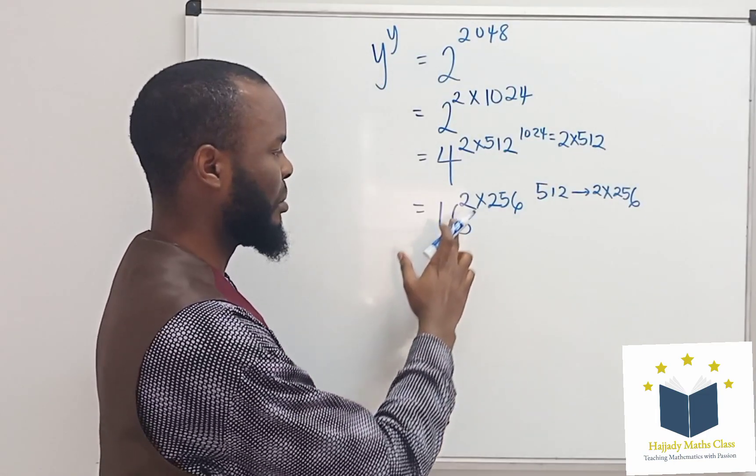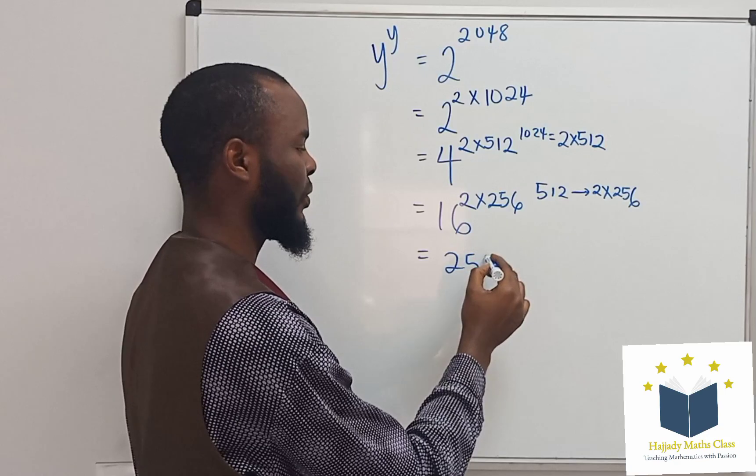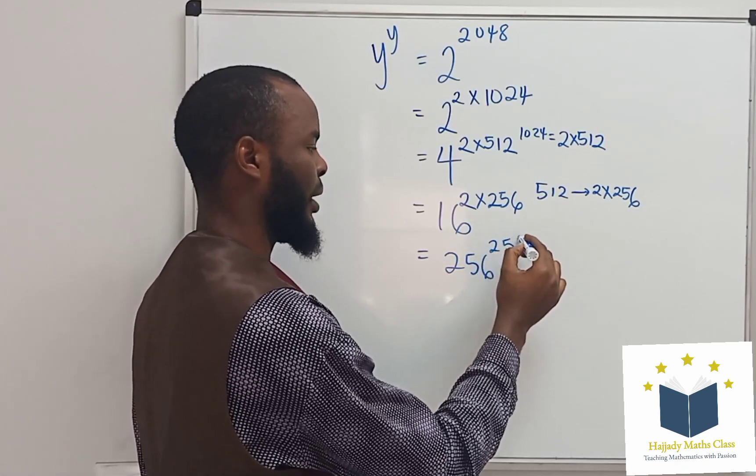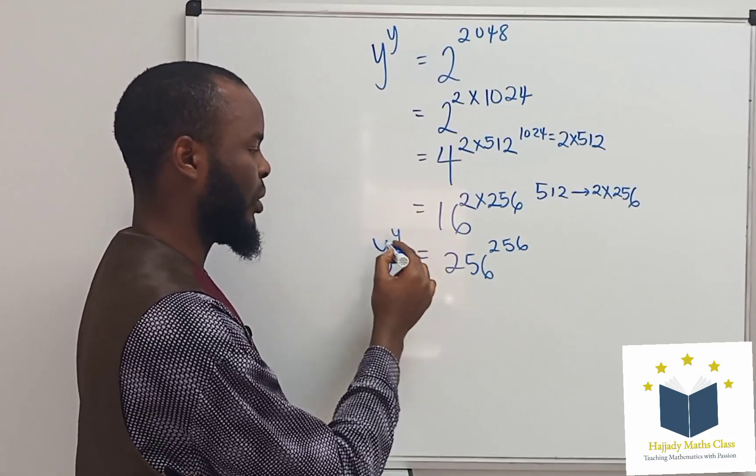16 to the power of 2 gives 256. So 256 to the power of 256. Here I'm going to have y to the power of y.